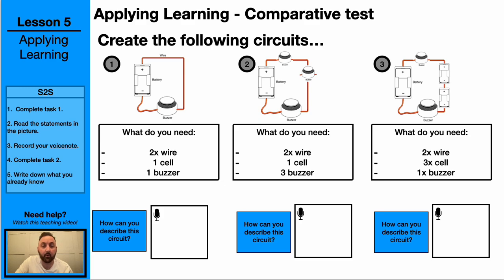We're going to repeat what we've just done with the bulb, but we're going to replace the bulb with a buzzer. You'll see that in each different circuit on this page, it increases the amount of cells, buzzers, or wires. Again, we're going to leave a voice note to describe what the circuit does — for example, whether the sound of the buzzer is loud, quiet, etc.